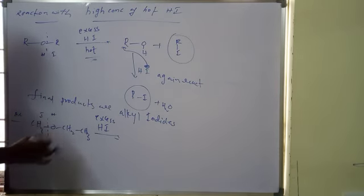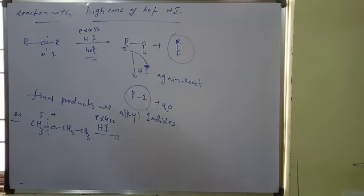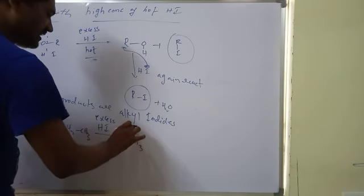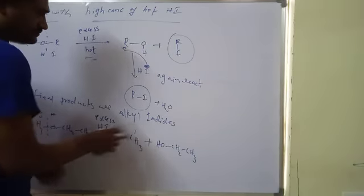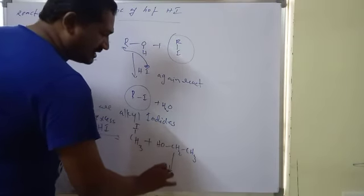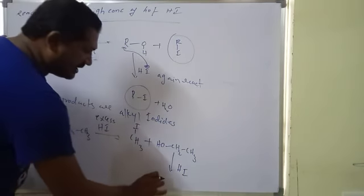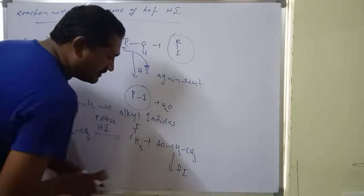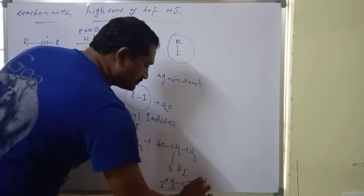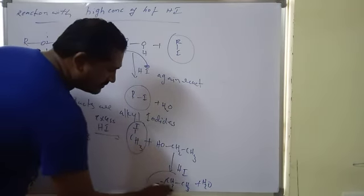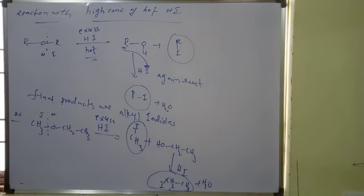If methyl ethyl ether is there, less substituted cleavage takes place. So methyl iodide plus ethanol is formed. Now this formed alcohol again reacts with excess HI. Again reacts with HI, and ethyl iodide is formed. Plus water. So the final products are both alkyl iodides — no alcohol is formed. If you take excess HI, the product is both alkyl iodides.